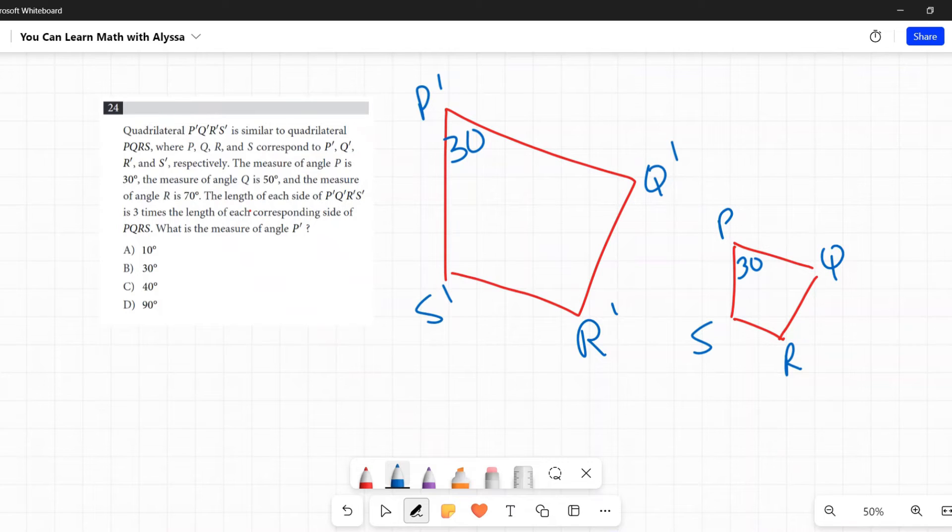Next information, the measure of angle Q is 50. All right, so 50, angle Q is 50 and Q prime would be 50. The measure of angle R is 70. Okay, 70, R prime would be 70.